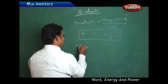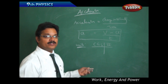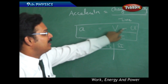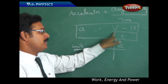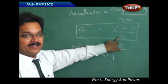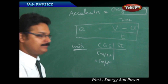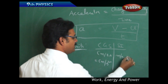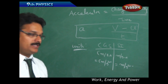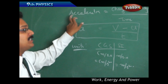Now for the units of acceleration — always derive units from the formula. In the numerator you have change in velocity, whose unit in the CGS system is centimeters per second; in the denominator, time is in seconds. So the unit is centimeters per second squared. In the SI system it is meters per second squared. Also note that velocity is a vector, so acceleration is also a vector — you must state both magnitude and direction.